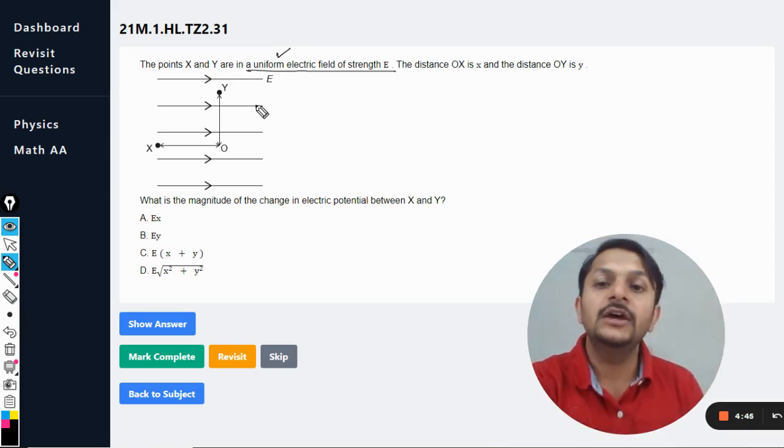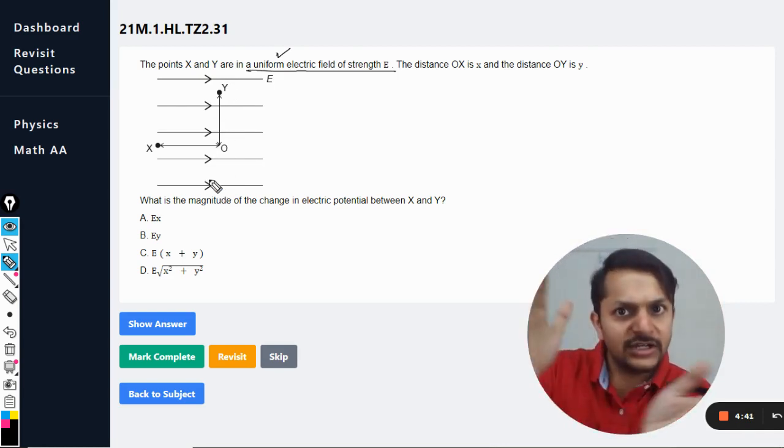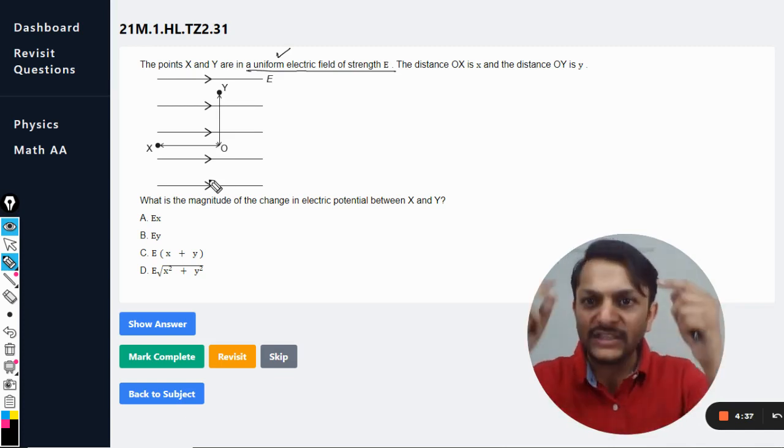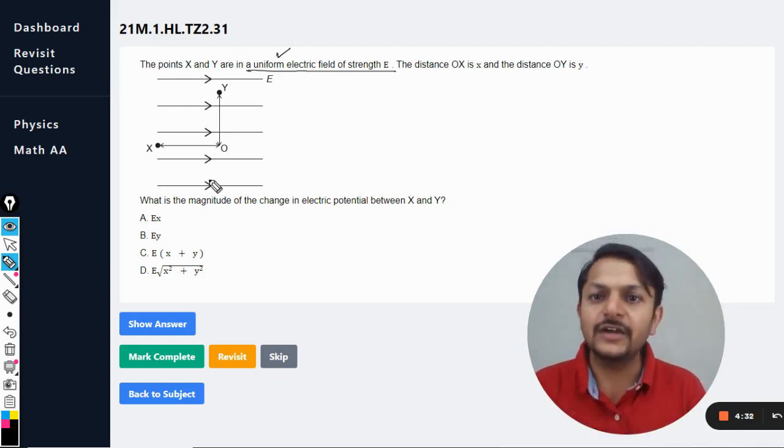The field lines they are all straight and they are not diverging or converging, they are all parallel number one, and number two the gap between all of the field lines is going to be the same. So definitely they are talking about the uniform electric field as shown in the diagram.